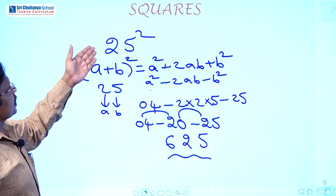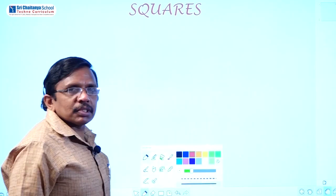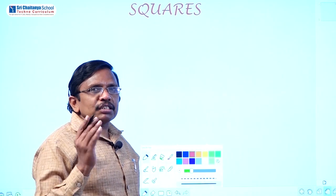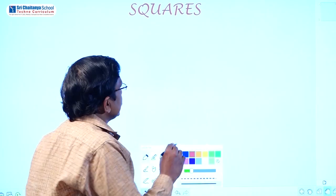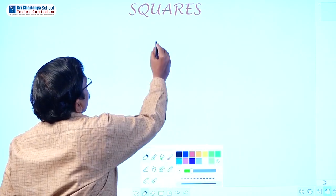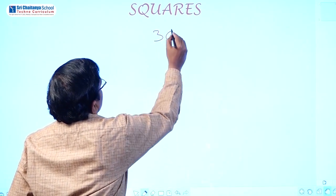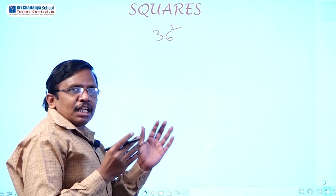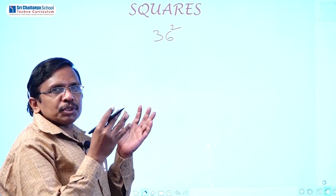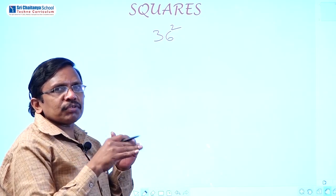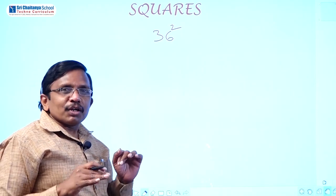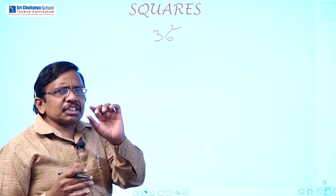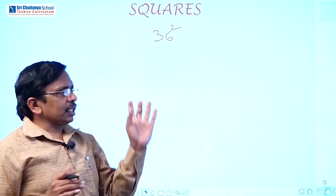Now I am taking one more example: 36 squared. We already know 36 into 36 equals 1296. But how can we find the square of any two-digit number without doing normal multiplication 36 into 36? We are applying the Vedic method using only the terms A square, 2AB, B square.